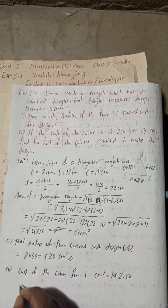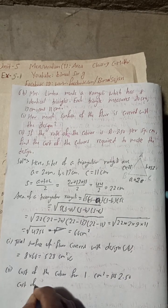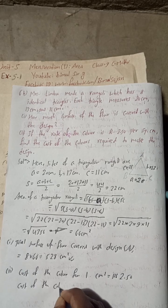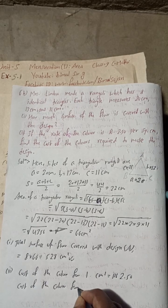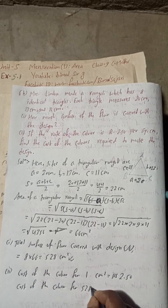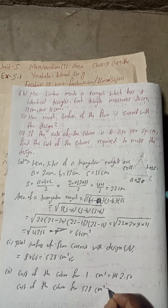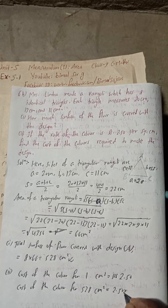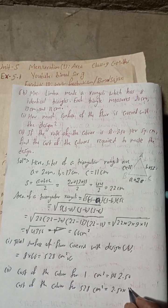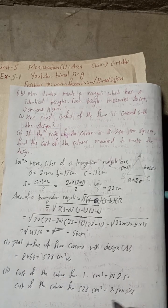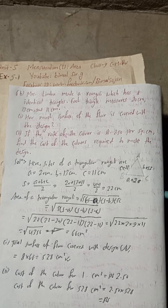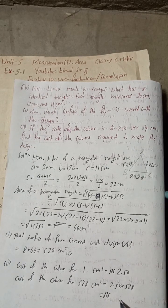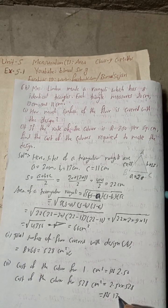Cost of the color for 528 cm² = 2.50 × 528 = Rs 1320.